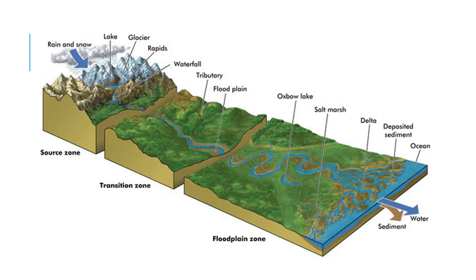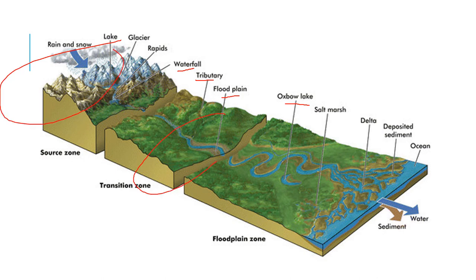This is probably the most complicated diagram you're going to see today in geography, but it's really important because rather than saying what the river is doing differently, it shows you what it looks like in much more detail. I would like you to pause the PowerPoint and make sure you are clear what all of these different things are: what is a waterfall, what's a tributary, what's a floodplain, what's an oxbow lake? In the next three weeks, we're going to break down the upper course, the middle course and the lower course in much more detail, so it would be really useful if you are clear on all of these features.